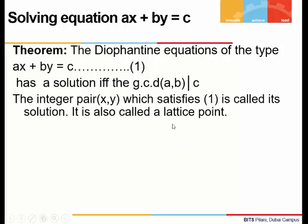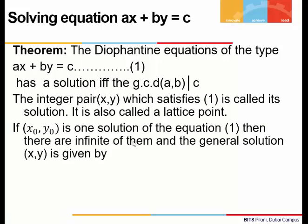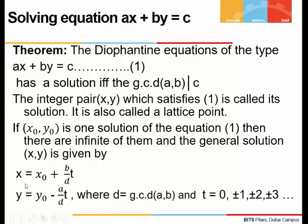The integer pair x and y which satisfies this equation is called the solution. When both x and y are integers, such a solution is called a lattice point. If (x₀, y₀) is one solution, the general solution is: x = x₀ + (b/d)t and y = y₀ − (a/d)t, where d is the GCD of a and b, and t takes values 0, ±1, ±2, giving us infinite solutions.